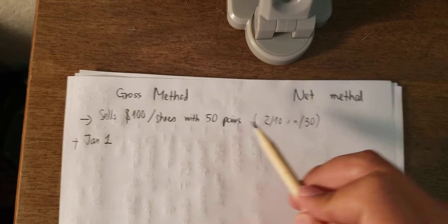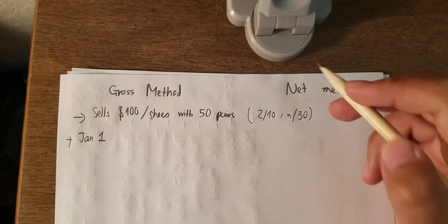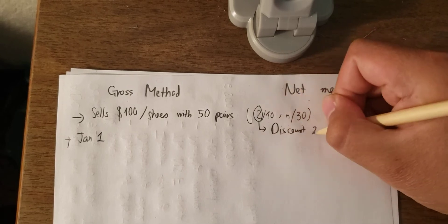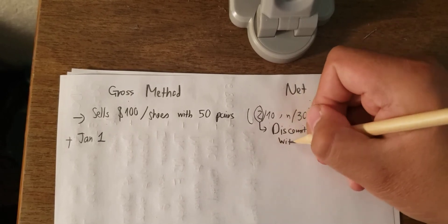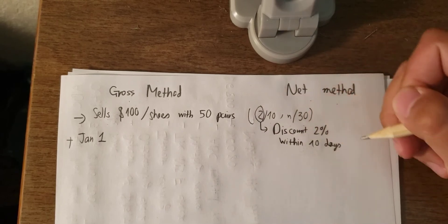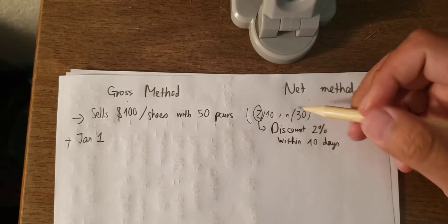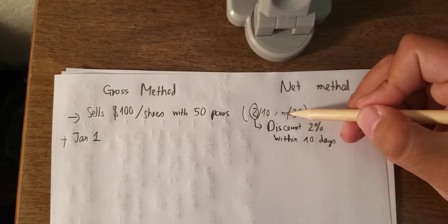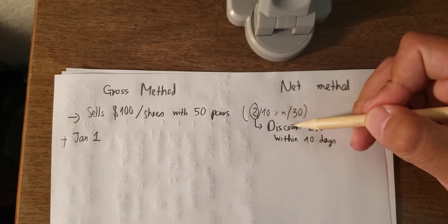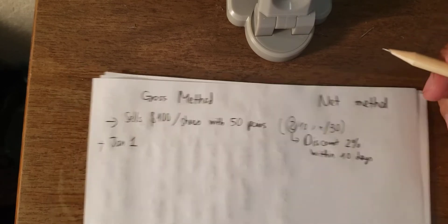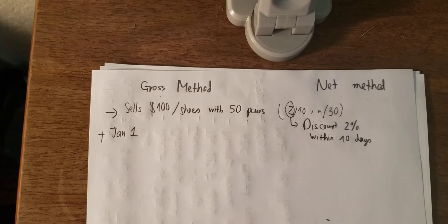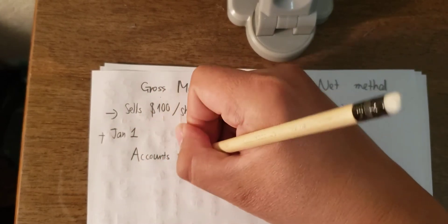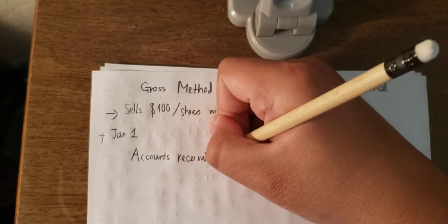For example, sales of $100 per pair of shoes, 50 pairs, with terms 2 over 10 and N over 30. The number 2 here is about a 2% discount. If the customer purchases within 10 days, they get a 2% discount. If they purchase after 10 days — for example, on day 11 — they don't get any discount.